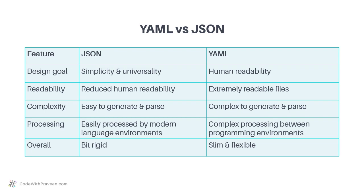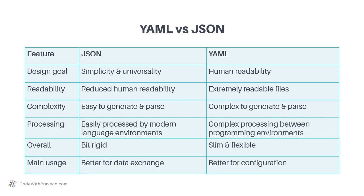When those complex structures need to be represented in JSON, it is possible but complex — you have to include various braces and indentations to represent the structure. When it comes to usage, JSON is used when you want better data exchange, such as in web applications exchanging data between client and server via APIs. However, YAML is predominantly used for configurations.